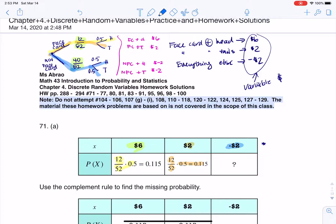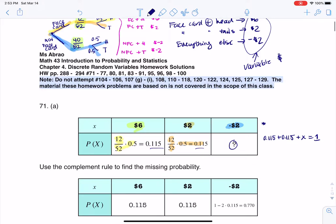But what I always opt to do instead is if I know these two numbers are 0.115, then I'm going to use the complement rule. Because basically 0.115 plus 0.115 plus this mystery number here, I'll just call it x, that has to total out to 1. So that's how I use the complement rule, and I find out x would be 1 minus 0.115 minus another 0.115. That's why you have 0.770 there. So there's my PDF.